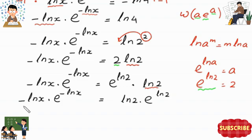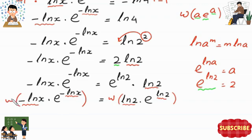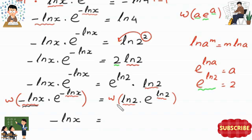Now both sides are in the correct form: the left side has negative ln of x times e to the power negative ln of x, and the right side has ln of 2 times e to the power ln of 2. We apply the Lambert W function on both sides. On the left, W gives negative ln of x; on the right, W gives ln of 2.